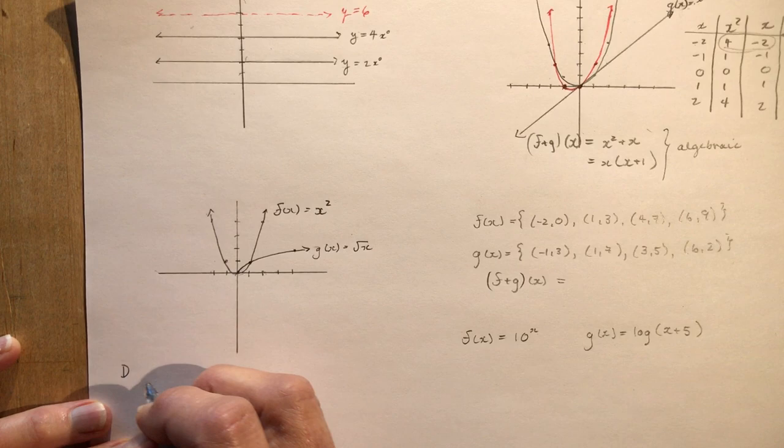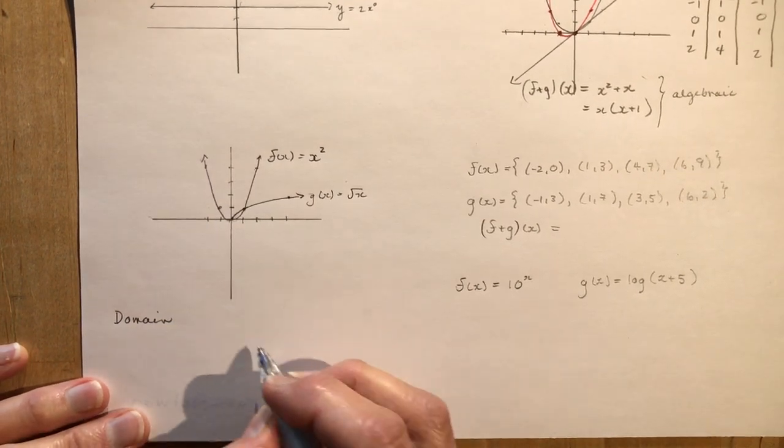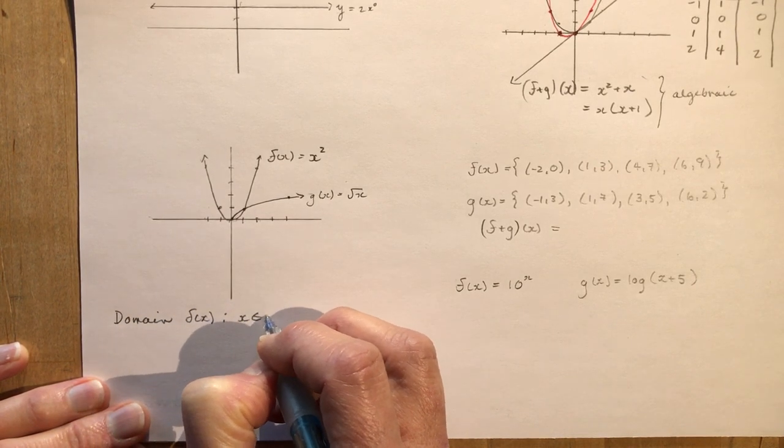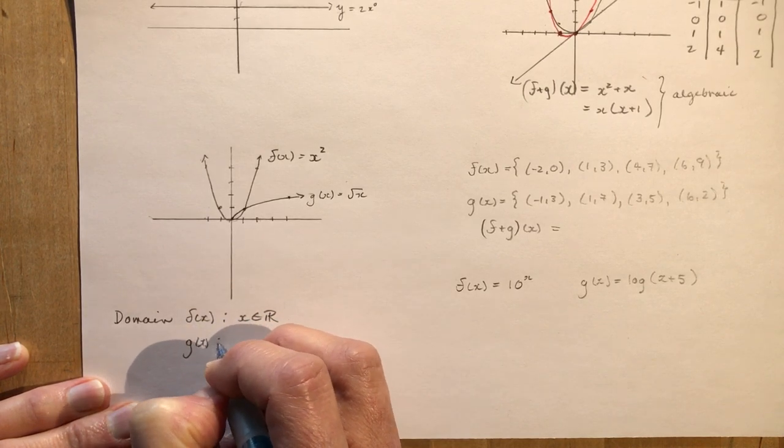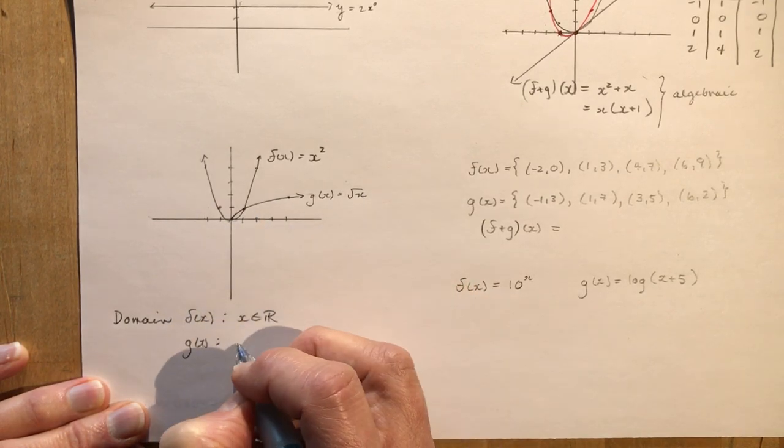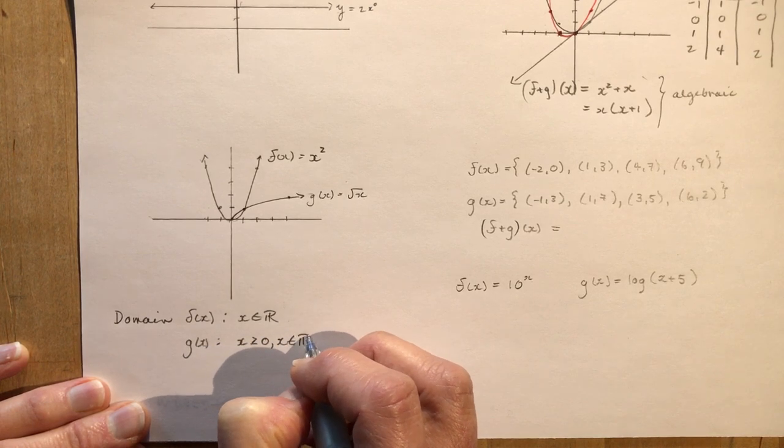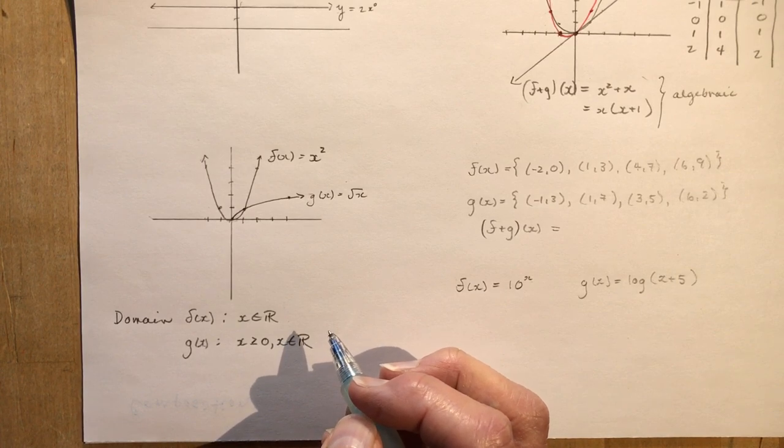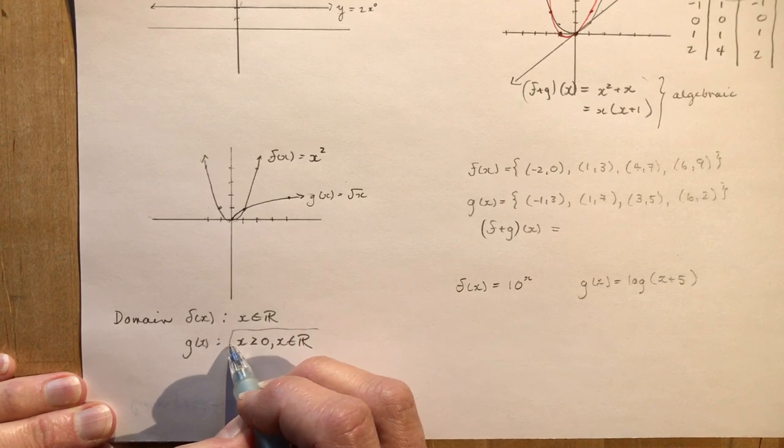The domain of f at x, it's a parabola, so I would just say x is an element of real numbers. But the domain of my g at x here, this is the radical function. I can't take the square root of negative numbers, so it would be x is greater than or equal to zero, x is an element of real numbers. So that means the domain of the functions when I add them together has to be where they intersect, which is only this part here.